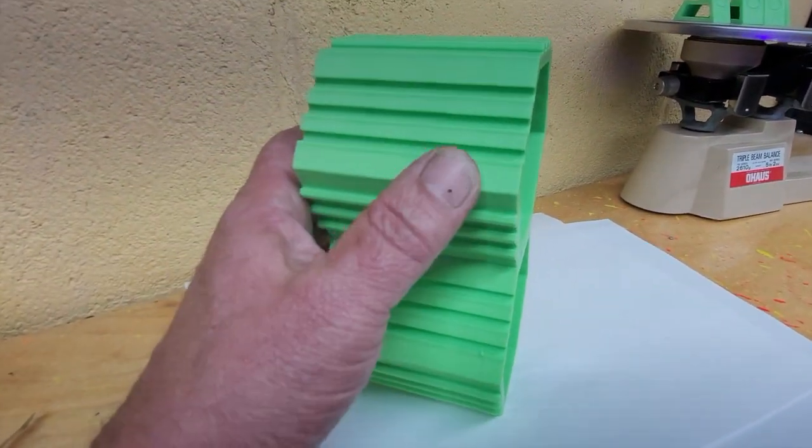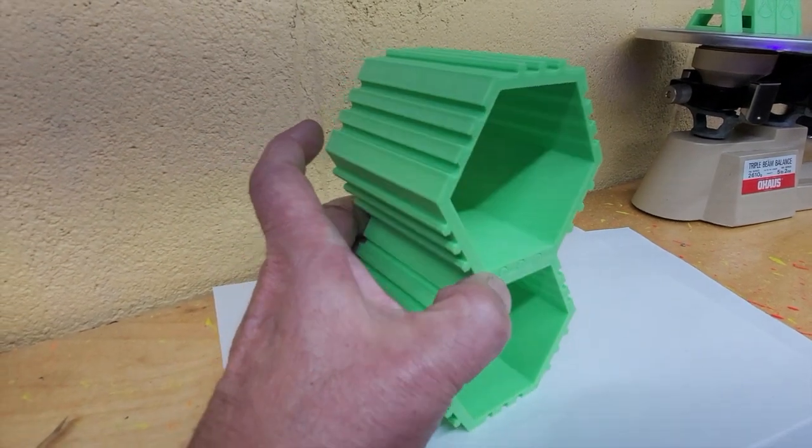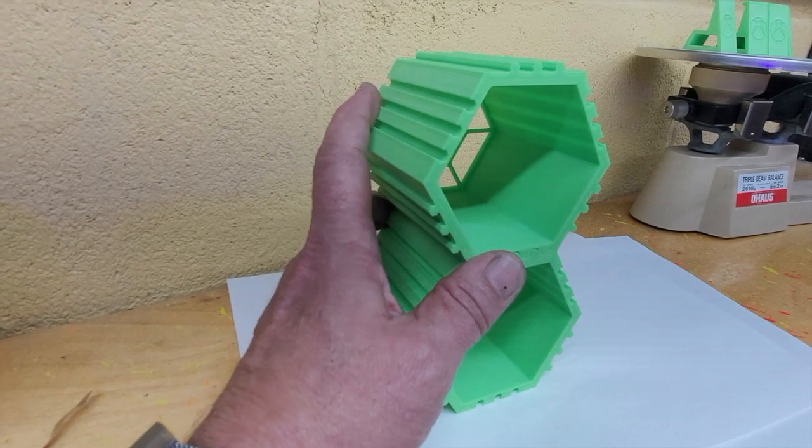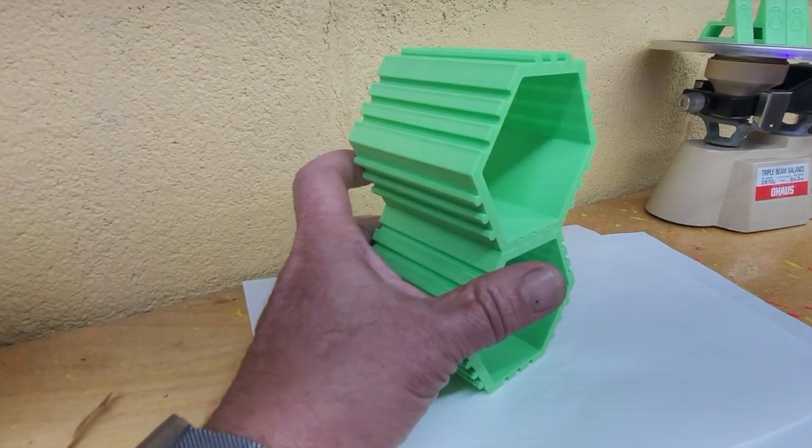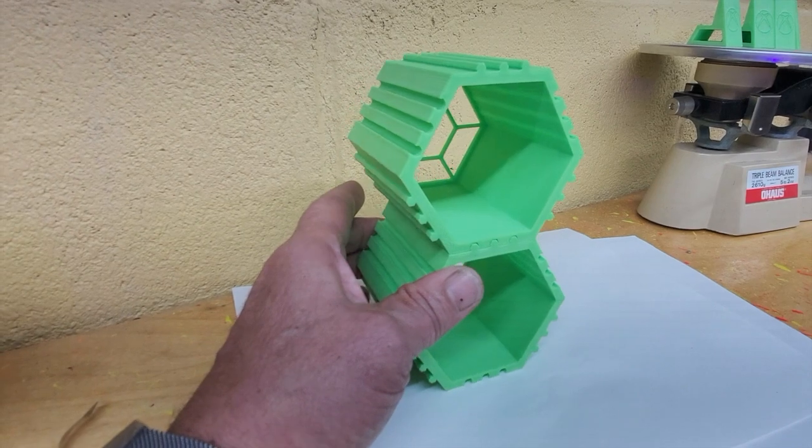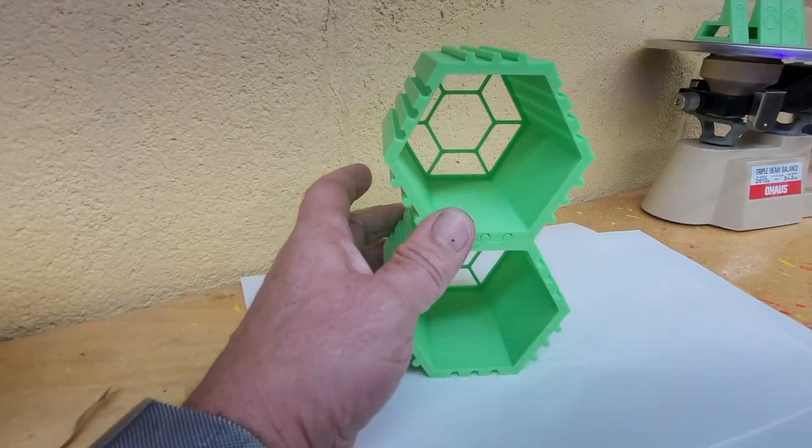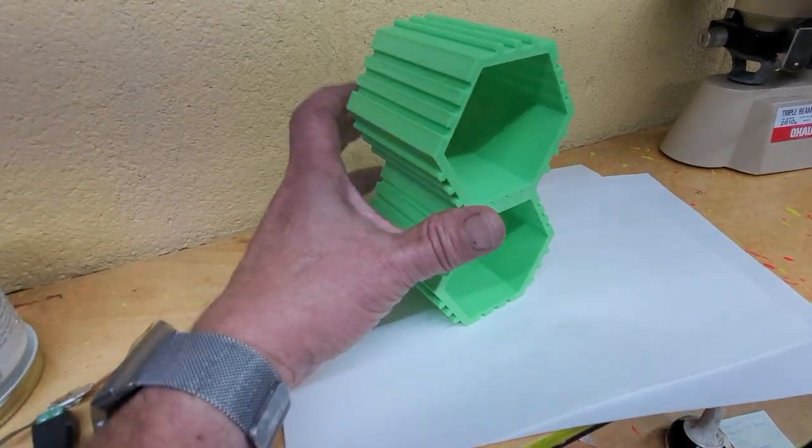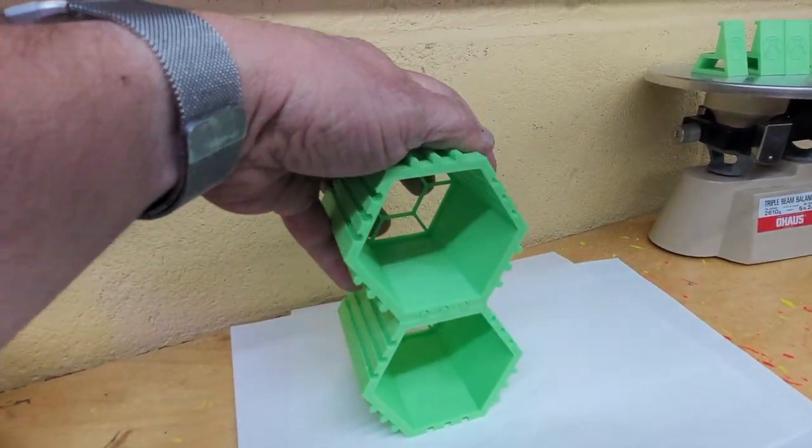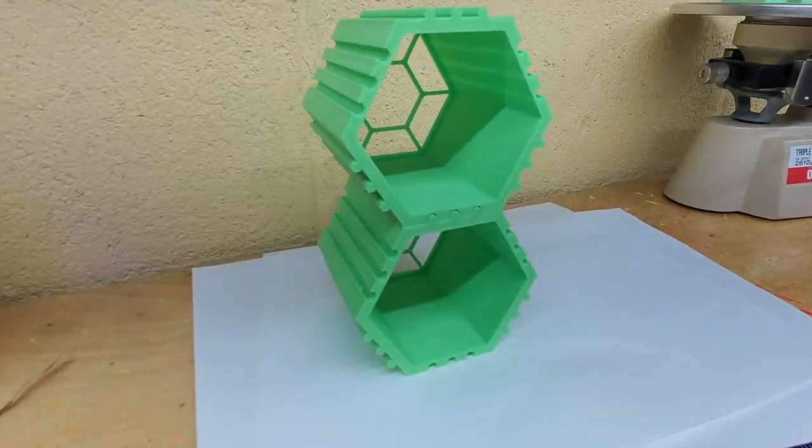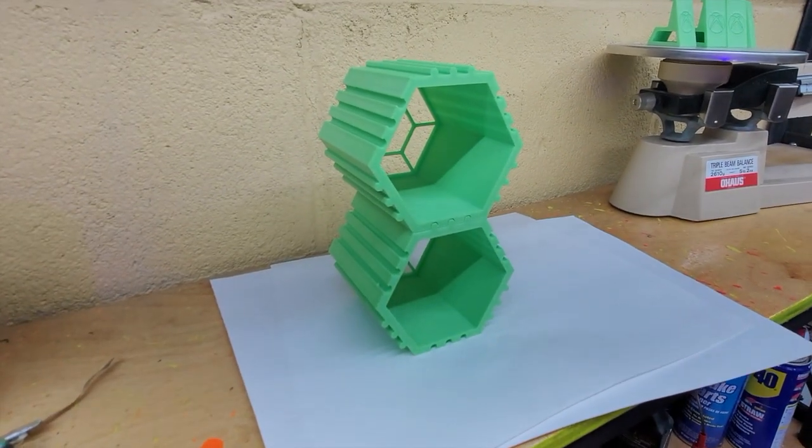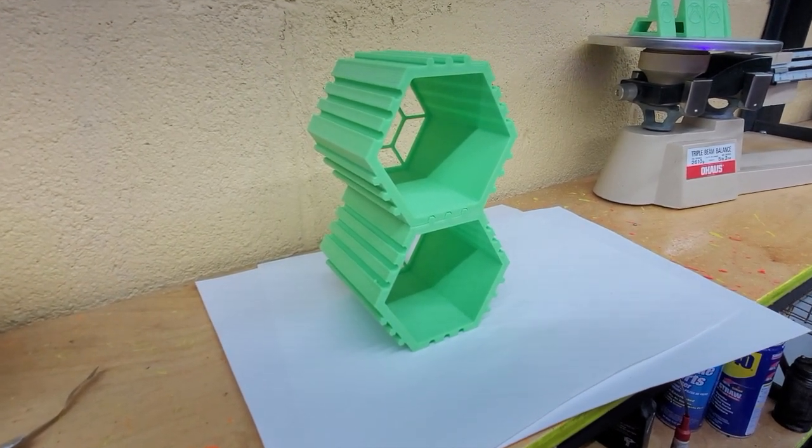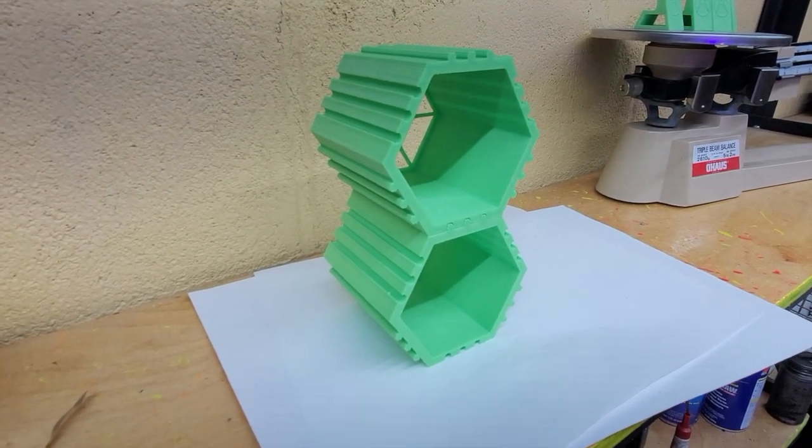I normally do shorter layers, but it was going to take more than a day if I did 0.15 or 0.1, so I made it 0.2 and made the infill 5%, really low. It's plenty steady, it does not need more than 5%. I'm going to print a lot more parts and you'll see it in a future video.